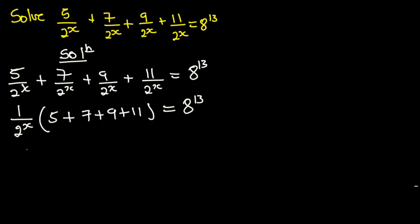From here we have 1 over 2 to the power x multiplying the sum. Now 5 plus 7 gives 12, then 12 plus 9 gives 21, and 21 plus 11 is 32. This will be equal to 8 to the power 13.